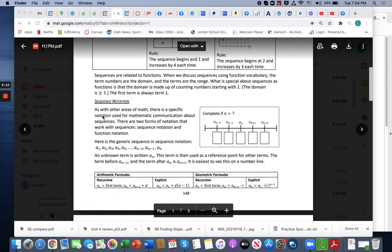Sequence notation. As with other areas of math, there is a specific notation used for mathematic communication about sequences. There are two forms of notation that work with sequences: sequence notation and function notation. Here is a generic sequence in sequence notation. You have a₁, a₂, and sometimes we just go a₃, a₄, a₅ because we know those are going to be sub numbers when they are listed just below the letter. And then we go aₙ₋₂, aₙ₋₁, and then aₙ is generally your last one or sometimes it can be your first one listed.